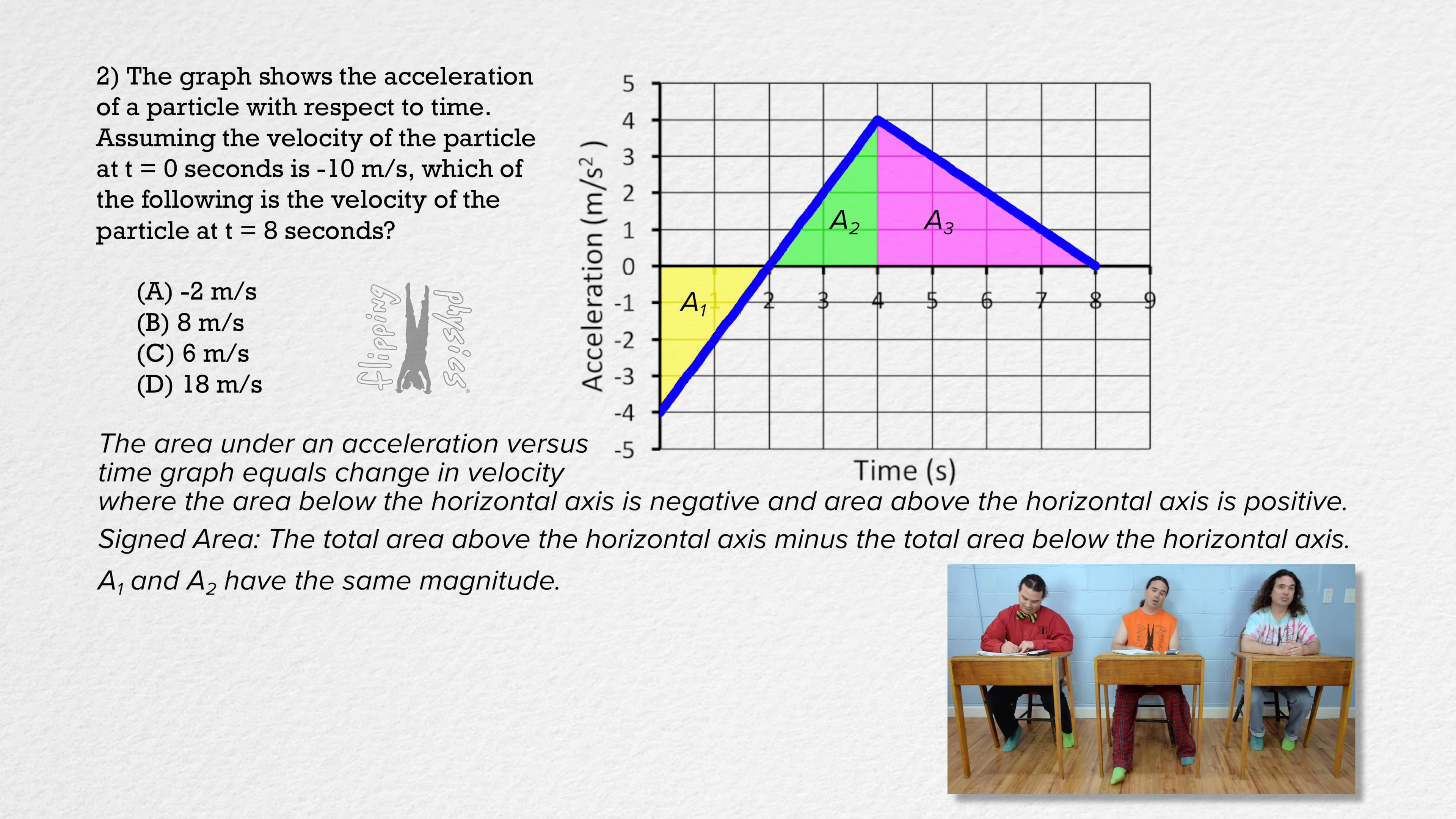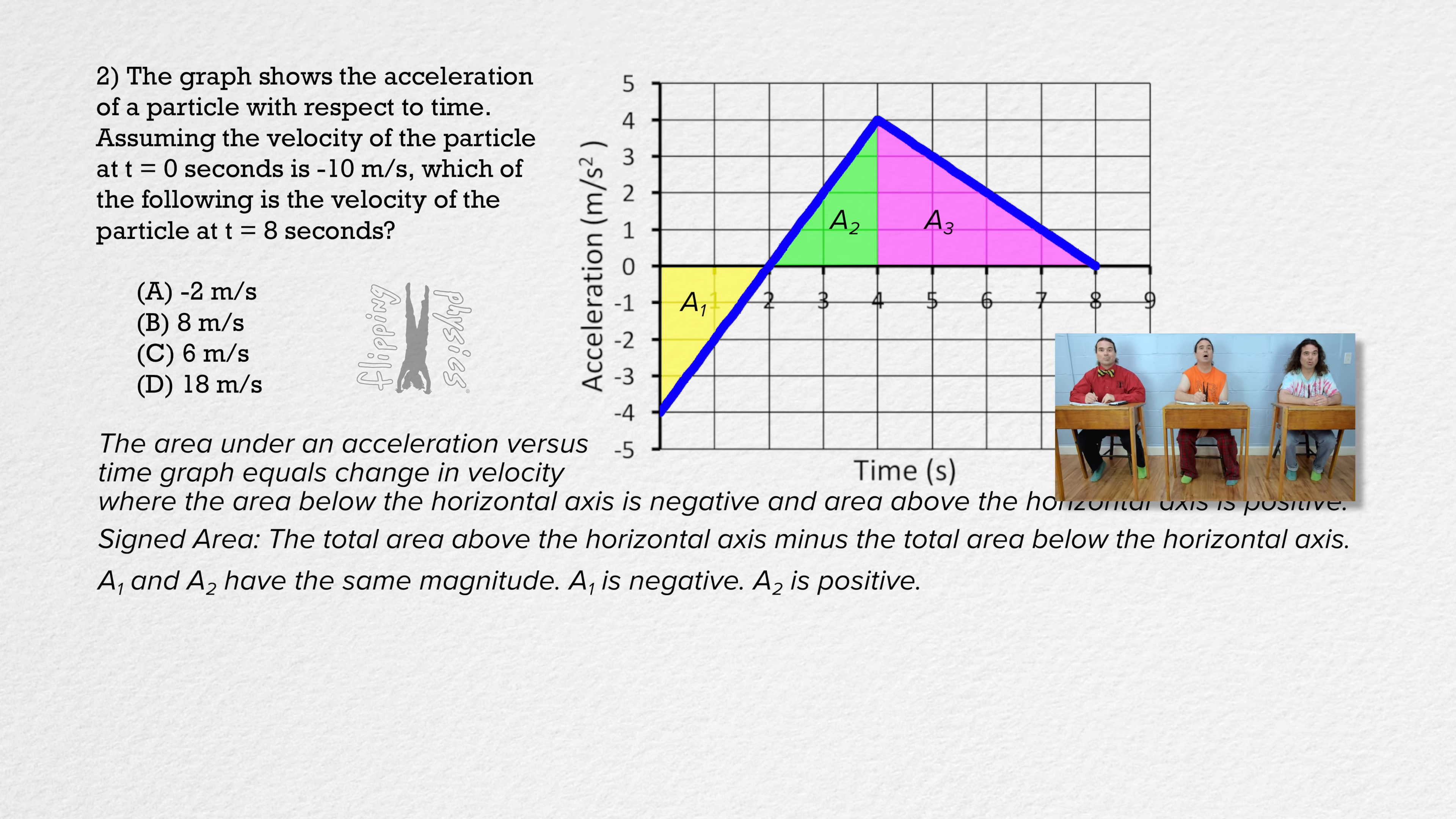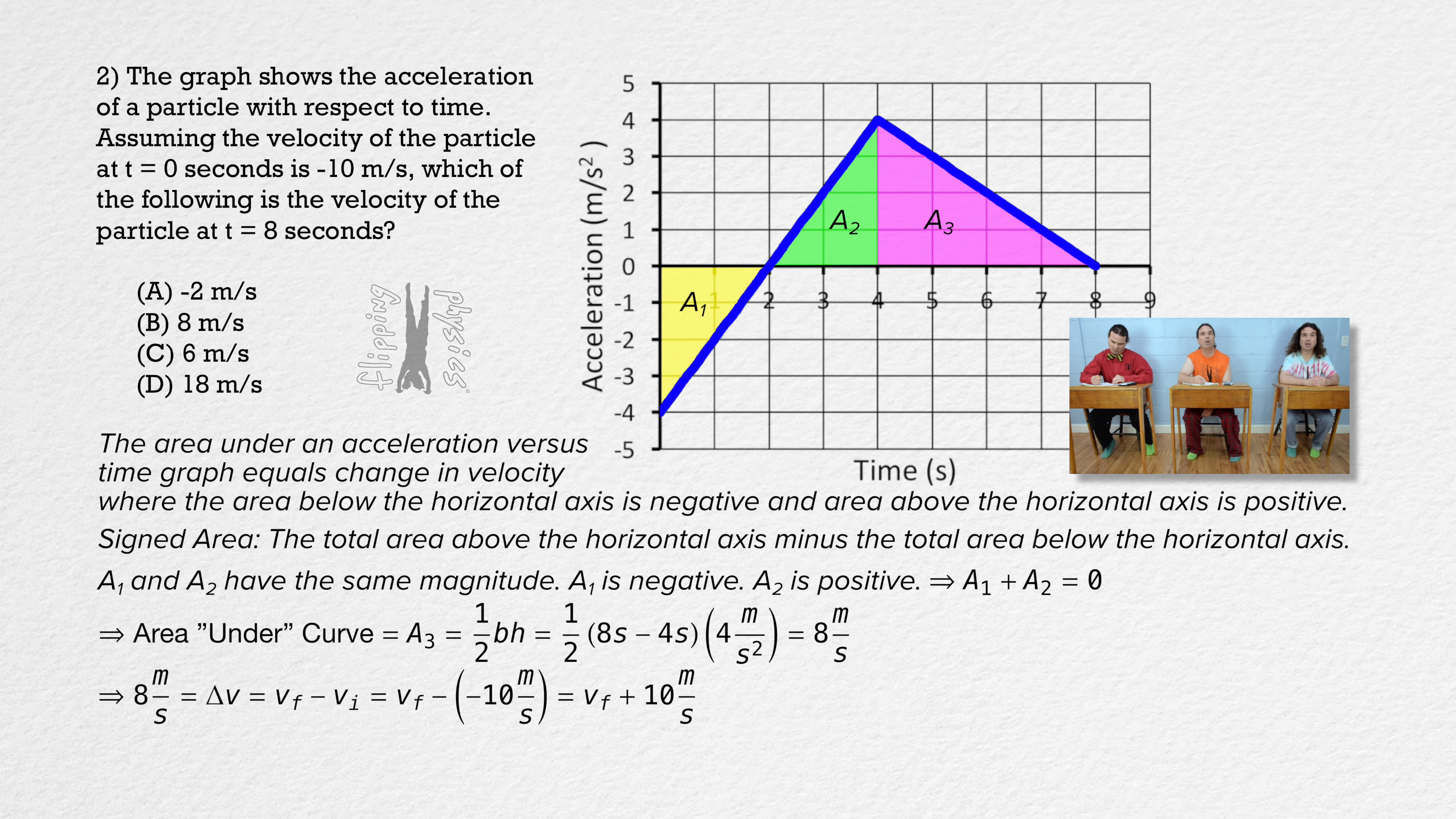Okay. Fixing my solution. Area 1 and area 2 have the same magnitude. However, area 1 is below the horizontal axis and negative, while area 2 is above the horizontal axis and positive. Therefore the signed area from 0 to 4 seconds is 0. So the signed area from 0 to 8 seconds is just the area from 4 to 8 seconds, or 8 meters per second. That still equals velocity final minus velocity initial, which means velocity final equals 8 minus 10 or negative 2 meters per second, which is choice A.